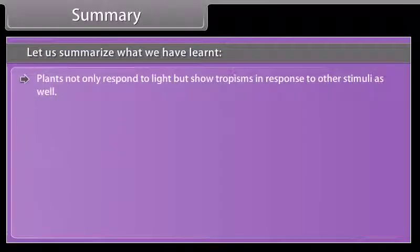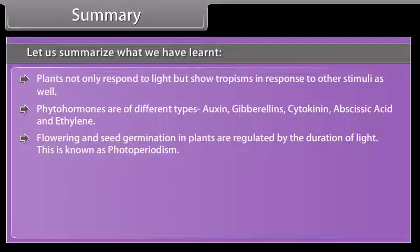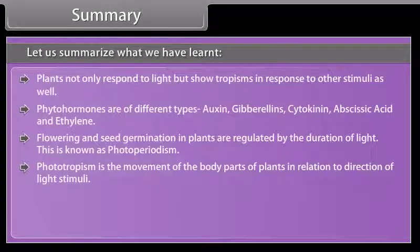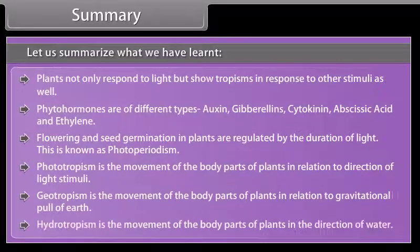Plants do not only respond to light but show tropisms in response to other stimuli as well. Phytohormones are of different types: auxin, gibberellins, cytokinin, abscisic acid, and ethylene. Flowering and seed germination in plants are regulated by the duration of light — this is known as photoperiodism. Phototropism is the movement of plant body parts in relation to the direction of light stimuli. Geotropism is the movement of plant body parts in relation to the gravitational pull of the earth. Hydrotropism is the movement of plant body parts in the direction of water.